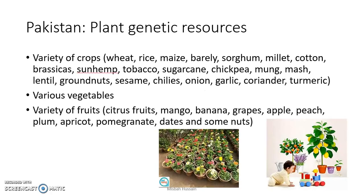The plant genetic resources cultivated in Pakistan include wheat, rice, maize, barley, and many other crop plants. Some are grown on a very large scale, like wheat, while others like garlic, coriander, and turmeric are grown on smaller areas but are still important domesticated plants. There are also vegetables such as cauliflower, ladyfinger, and brinjal grown across larger areas.